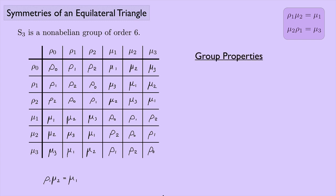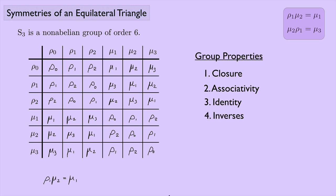Let's verify that S3 actually satisfies the group properties. Is it closed? Yes — any two elements composed give another element in the group. Is it associative? Yes — composition of functions is always associative. Is there an identity? Yes — ρ₀ leaves everything unchanged. Does every element have an inverse? Yes: ρ₁ and ρ₂ are inverses of each other, and each flip μ₁, μ₂, μ₃ is its own inverse. So S3 is indeed a group.